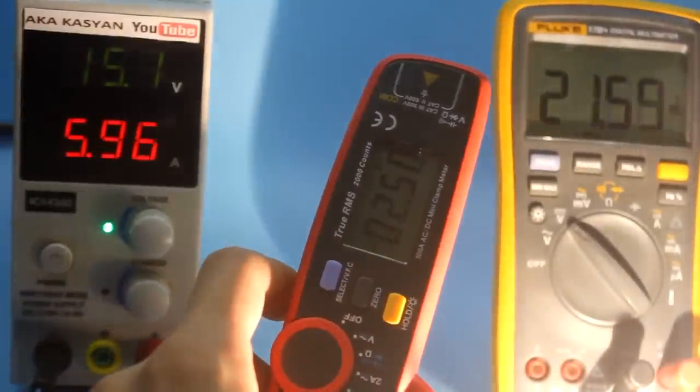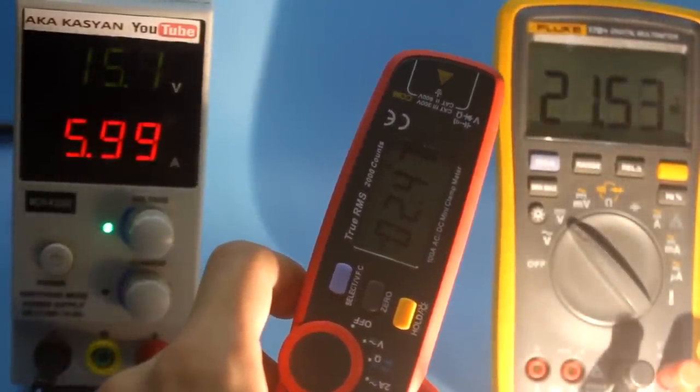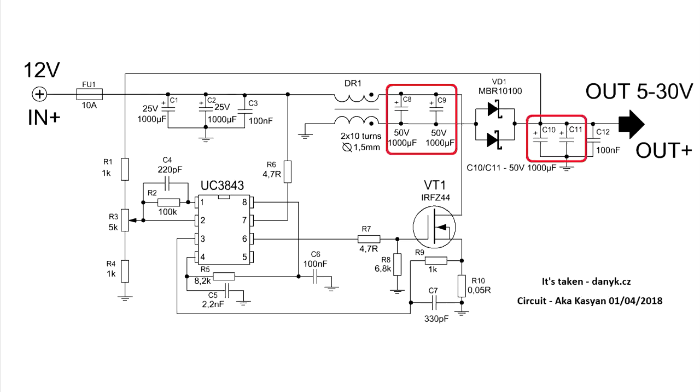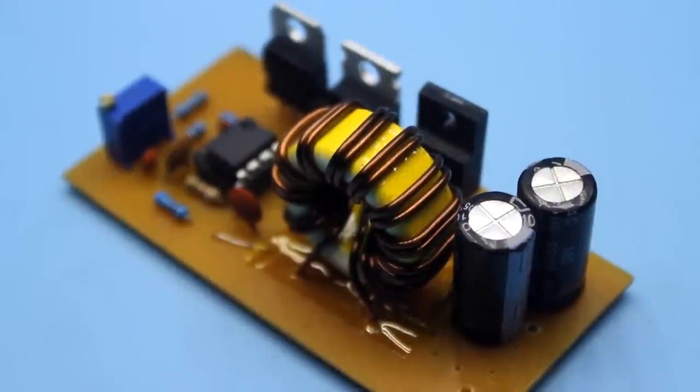Specifically, my power supply provides an output current of up to 3A. I do not need more. This is due to the fact that I have a small capacity for storage capacitors. But the circuit is capable of providing an output current of up to 5A so that it is universal.